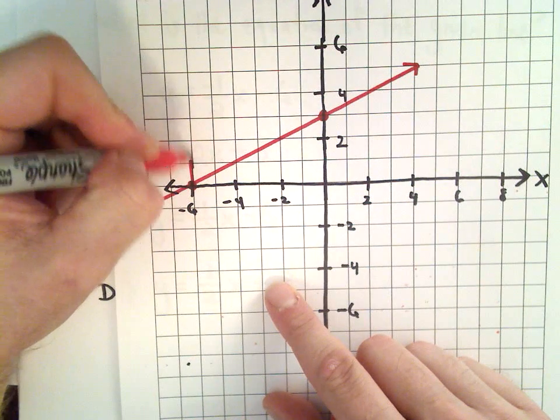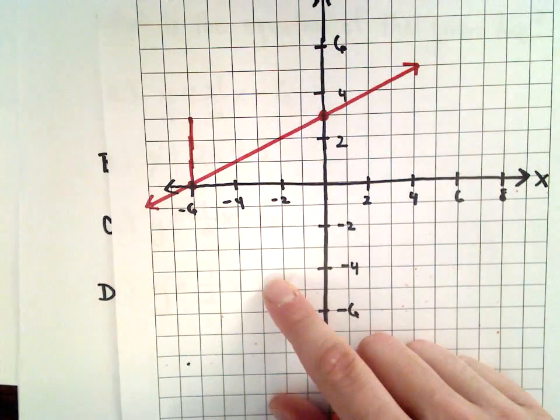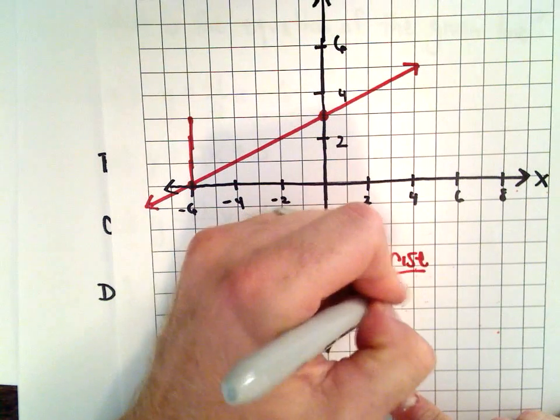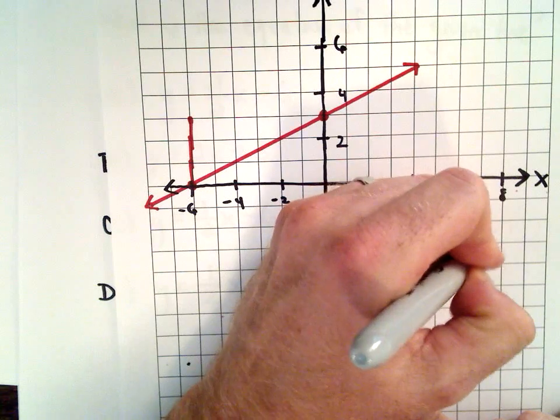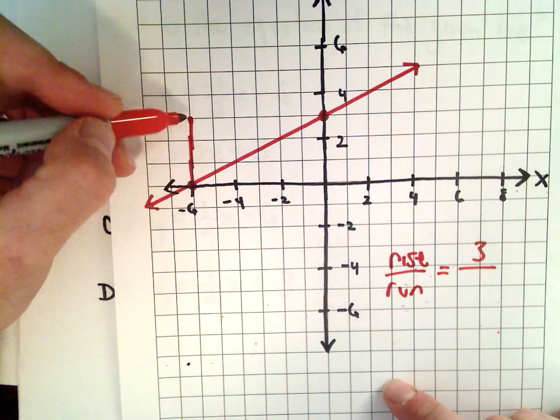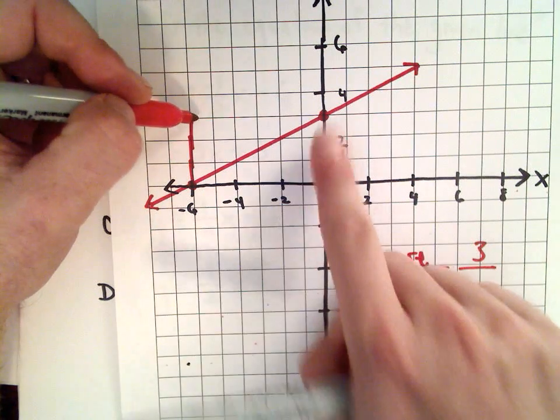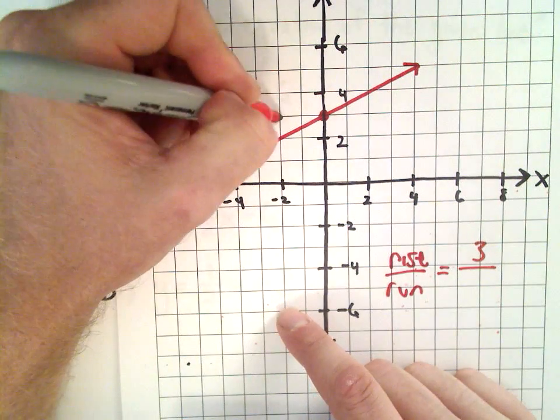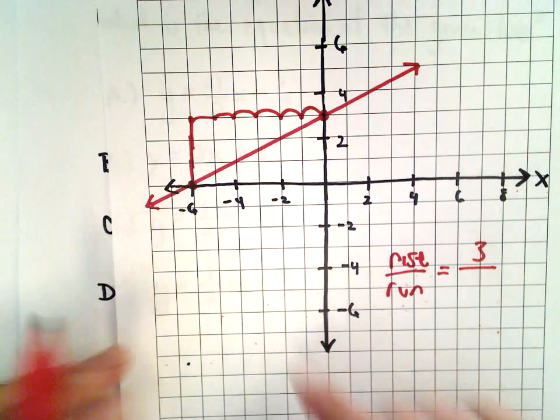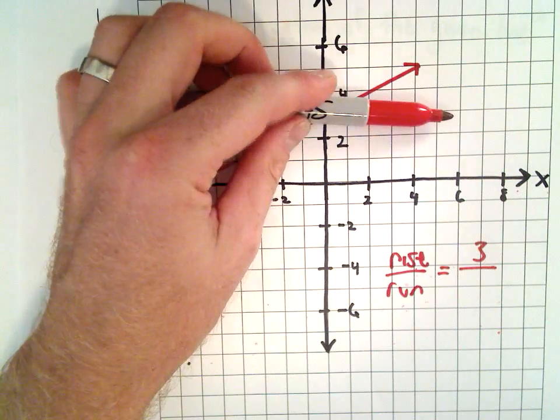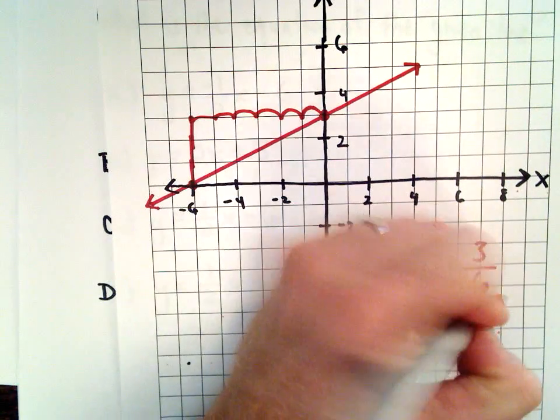Well, I can go up 1, 2, 3 units. So my rise would be 3 units. I've gone up positive 3 units, positive being in the up direction. And then to get to my other point, I would go over 1, 2, 3, 4, 5, 6 units. So I'm going in the positive direction because I'm going to the right. So my run is 6.